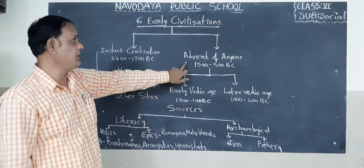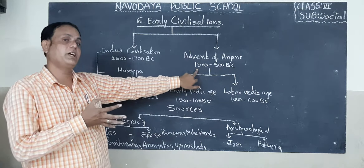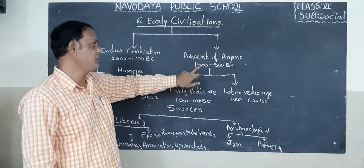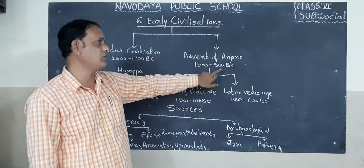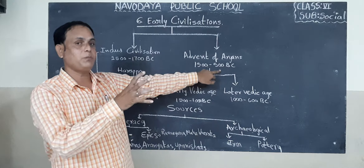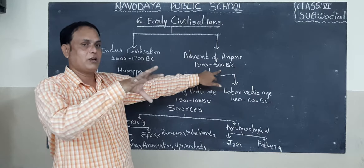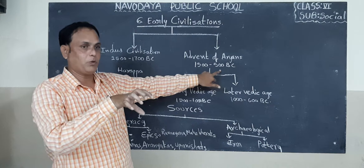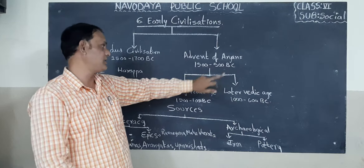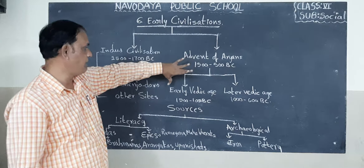Next is the advent of the Aryans. When Aryan people came to our country, between 1500 to 500 BC, they invaded our country and settled here. These people developed further.